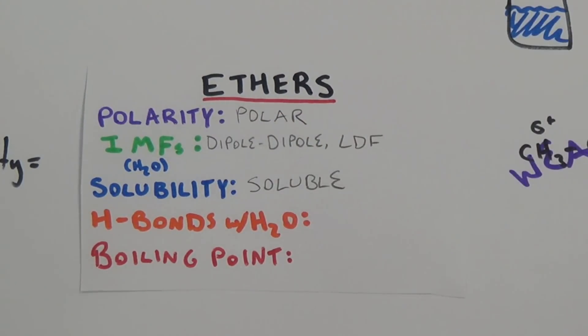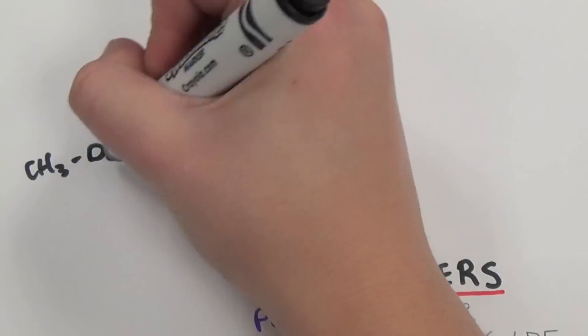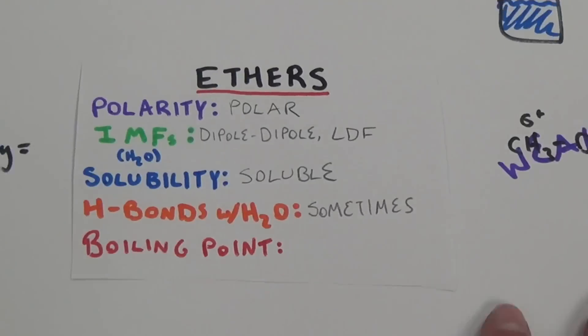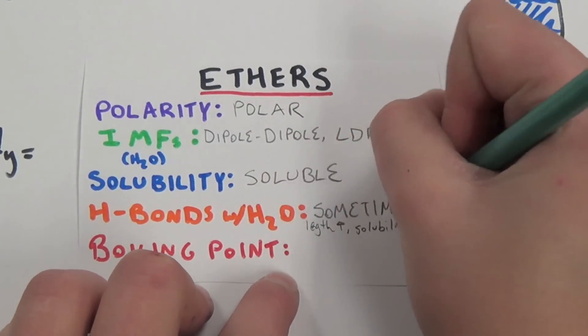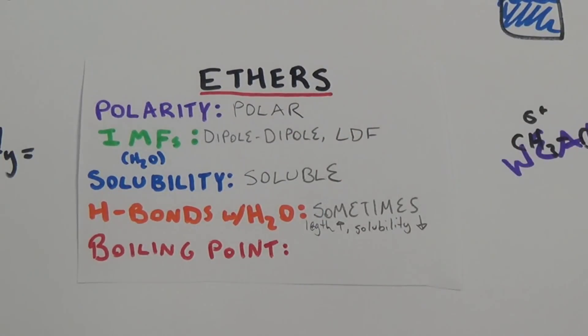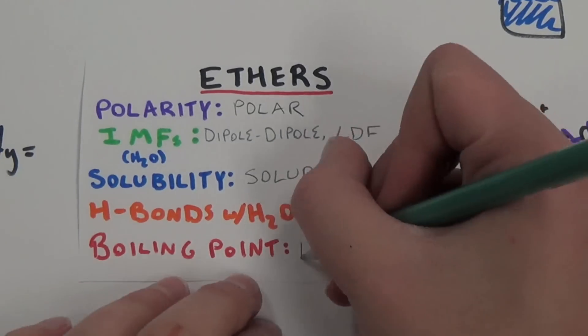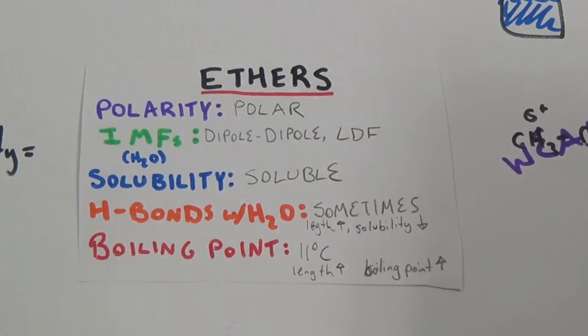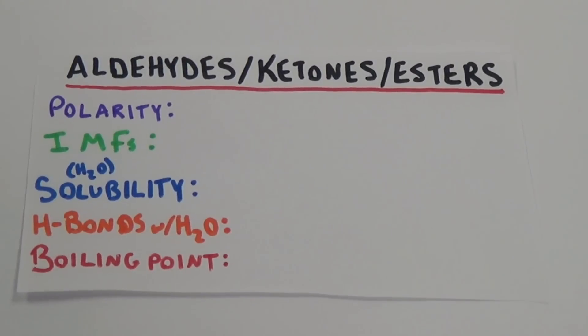Ethers are very soluble in water, and although they cannot hydrogen bond to themselves, they can occasionally accept hydrogen bonds from water. As the length of the carbon chain increases, solubility decreases due to the increased amount of London dispersion forces present. However, as the length of the carbon chain increases, the boiling point will increase as well.